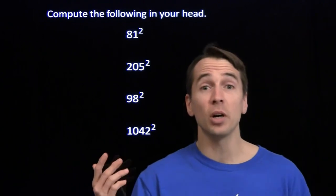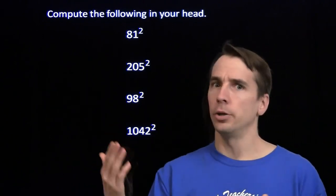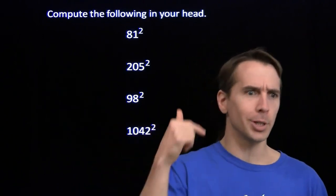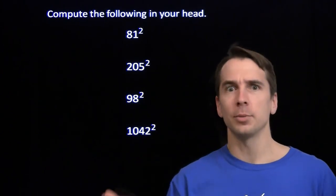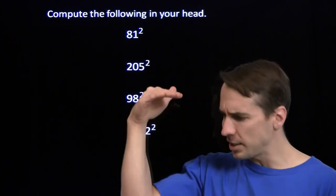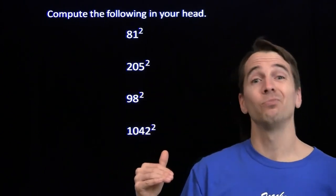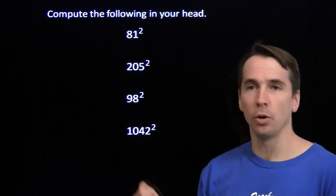98 squared — that's the square of 100 minus 2. 100 squared is 10,000, minus 2 times 100 times 2, that gives us minus 400, takes us down to 9,600. You've got to tack on that 2 squared, that's 4. So 9,604.